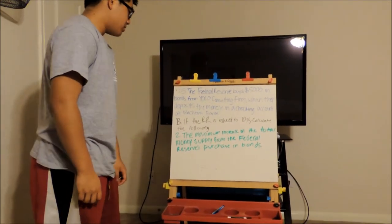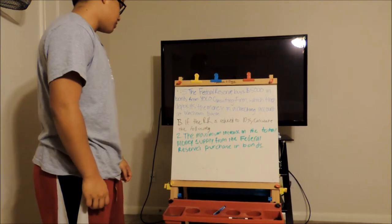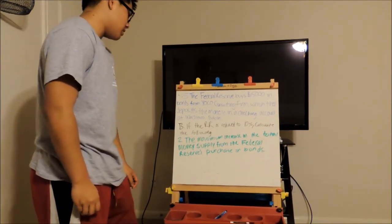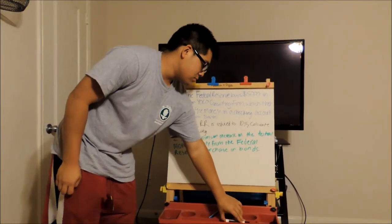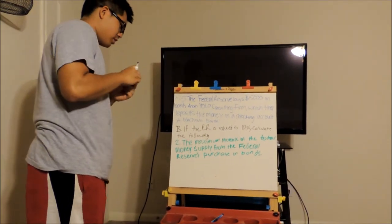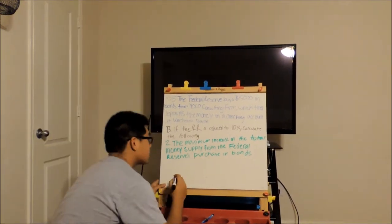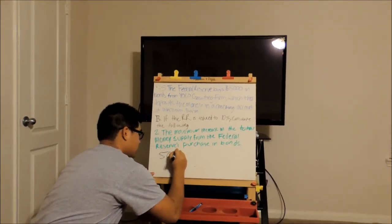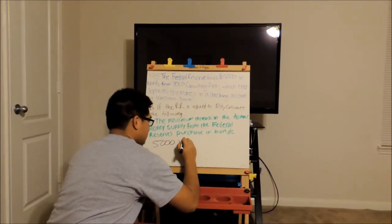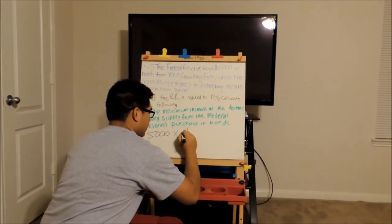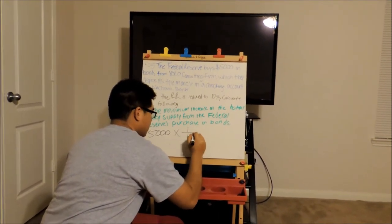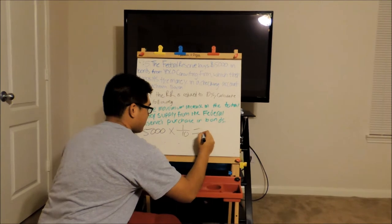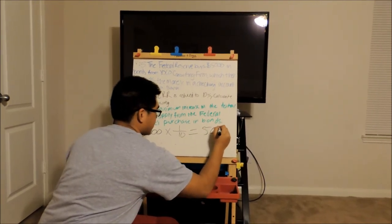Number two: the maximum increase in the total money supply from the Federal Reserve purchase of bonds. So what you would do is you would multiply your demand deposit, which is $5,000, times 1 over 0.10, which is 10, and that should give you $50,000, which is your answer.